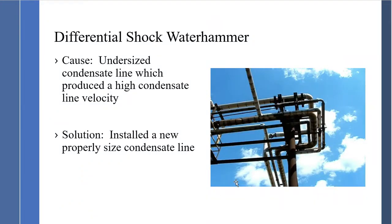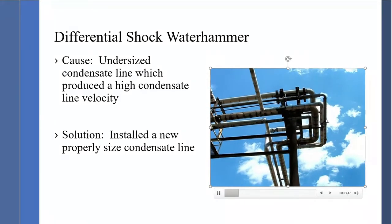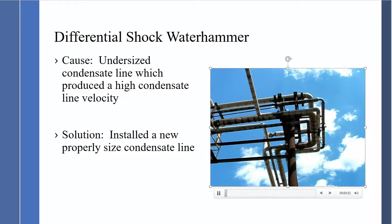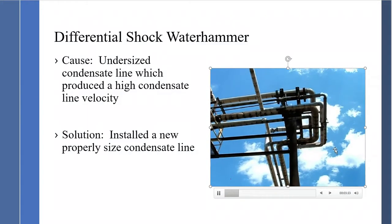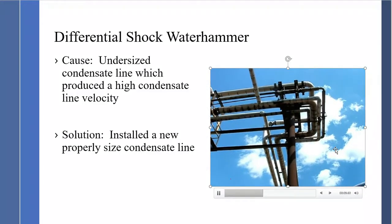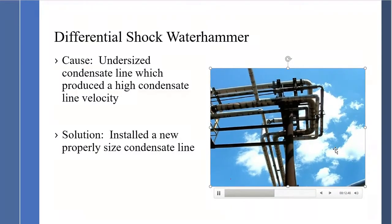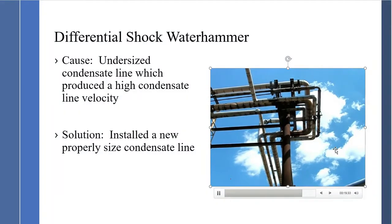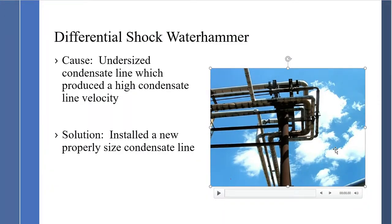Another differential shock video shows significant pipe movement. The differential shock was caused by an undersized condensate line producing high condensate line velocity, with severe reactions occurring throughout the system. In this application, a new condensate line had to be installed — properly sized, supported, and guided.